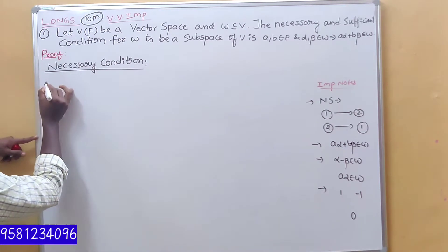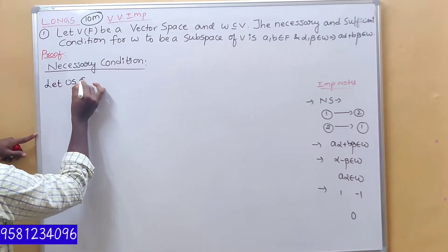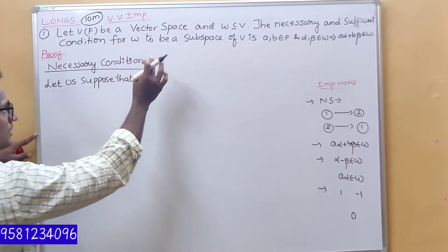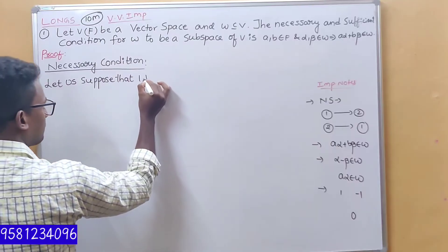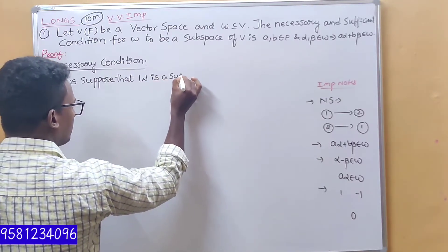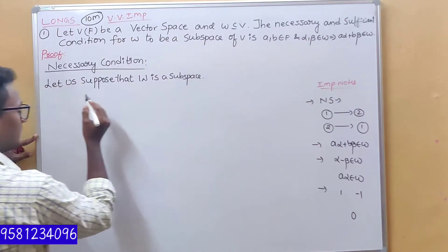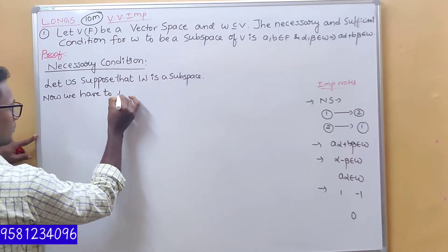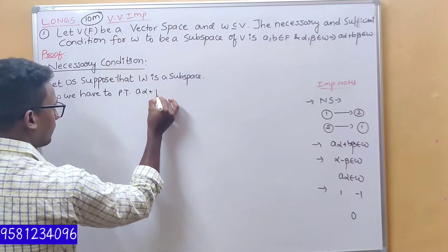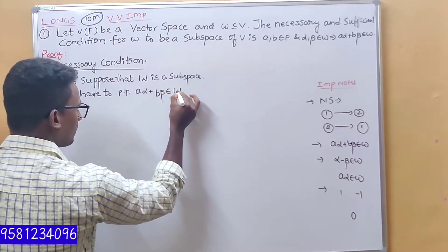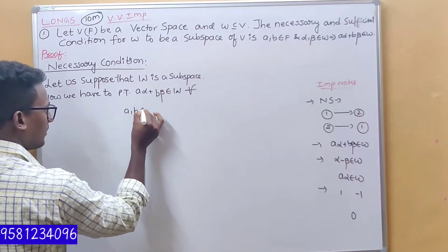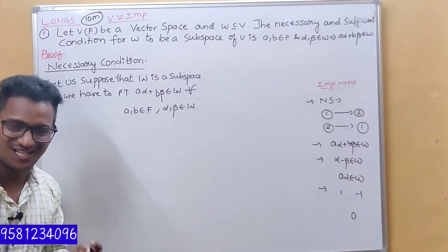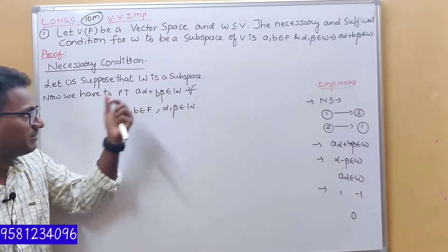The necessary condition: Let us suppose that W is a subspace. Now we have to prove that A·alpha plus B·beta belongs to W, for all A, B belonging to F and alpha, beta in W. This is true — A·alpha plus B·beta belongs to W. We have to prove the first element: A belongs to F and alpha belongs to W. Since W is a subspace.